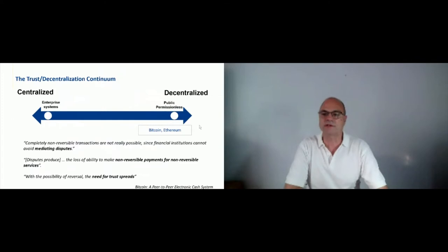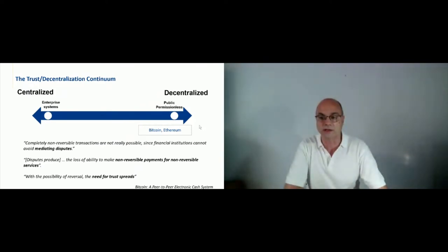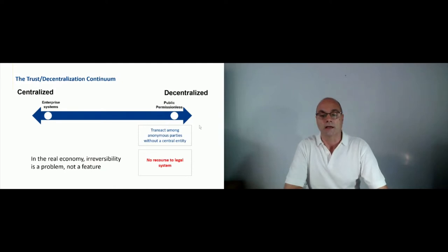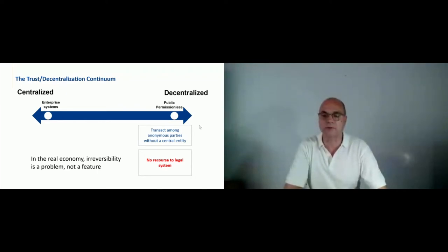As we all know, 12 years ago in the middle of the financial crisis, and as a reaction to centralized systems, Bitcoin appeared — a peer-to-peer version of electronic cash providing the ability to transact among anonymous parties without requiring a central authority. The objective was to implement non-reversible payments for non-reversible services, because if there is a central entity with a known identity, it is not possible to avoid mediating disputes and the corresponding need for trust. The problem is that in the real economy and real society, most transactions are not irreversible, and this is not a technical limitation — it's a core property embedded in the values of a modern society. And despite some benefits, one major drawback of public permissionless networks is that there is no recourse to any legal system when things go wrong.